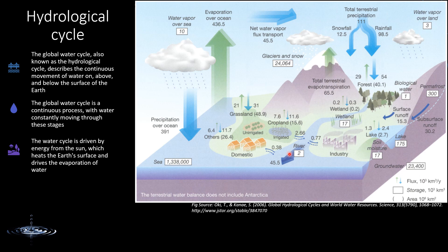The total annual precipitation and evapotranspiration over land and ocean are estimated at around 111,000 km³. Total annual precipitation is 111,000 km³, with snowfall at 12.5 and rainfall at 98.5 thousand km³. Precipitation is the sole source of water on the land surface. Precipitation also occurs over the ocean, and that quantity is 391,000 km³.